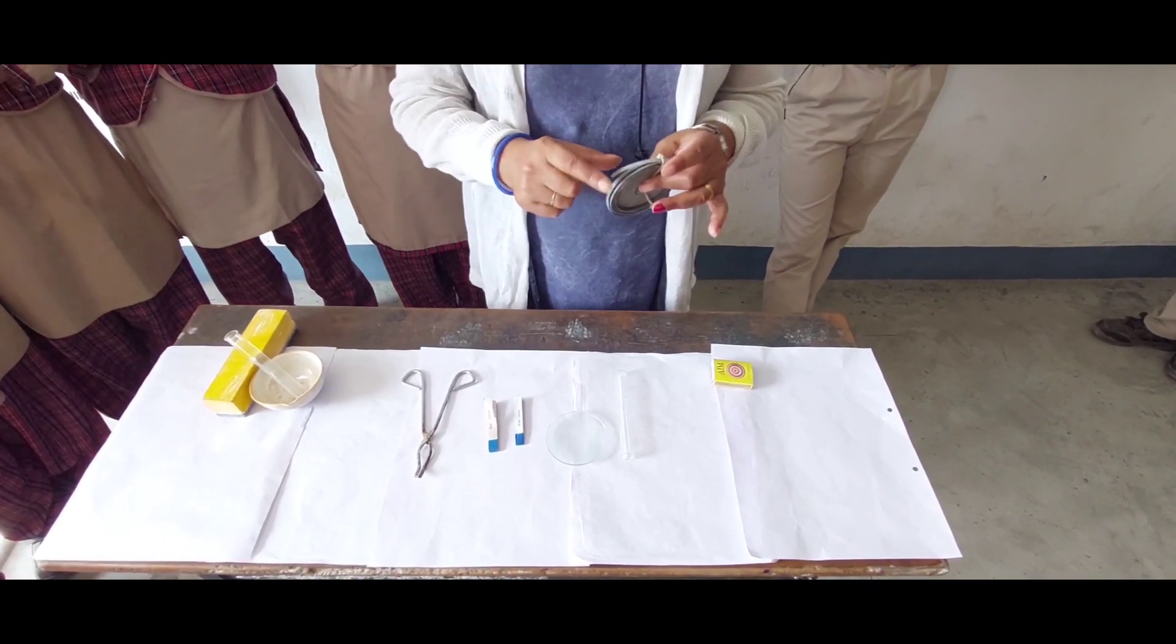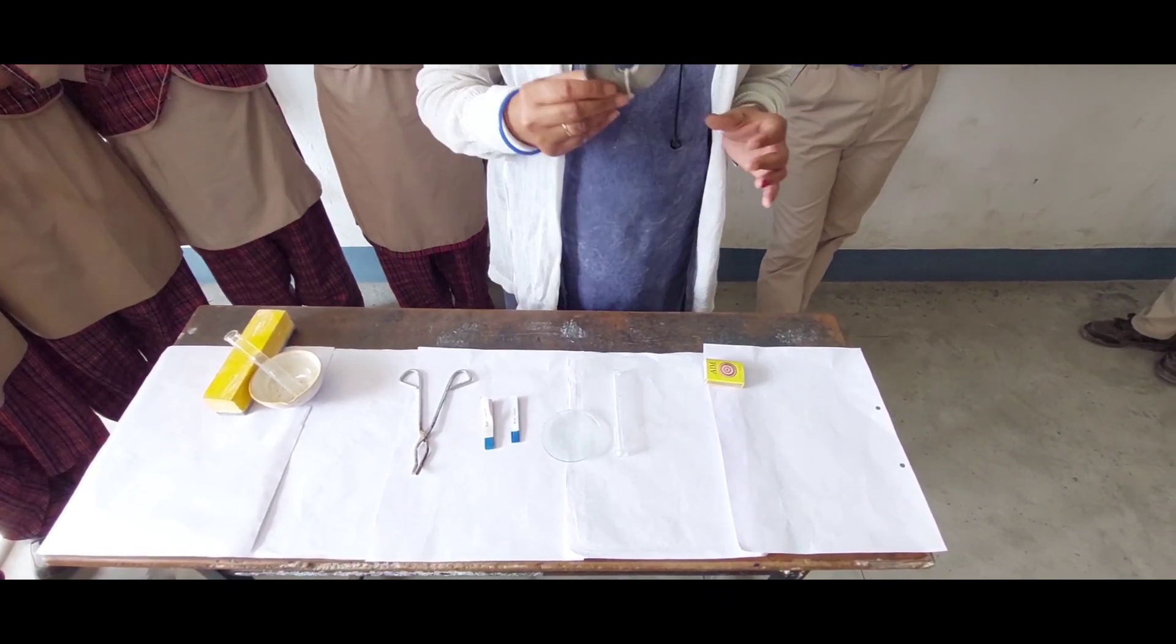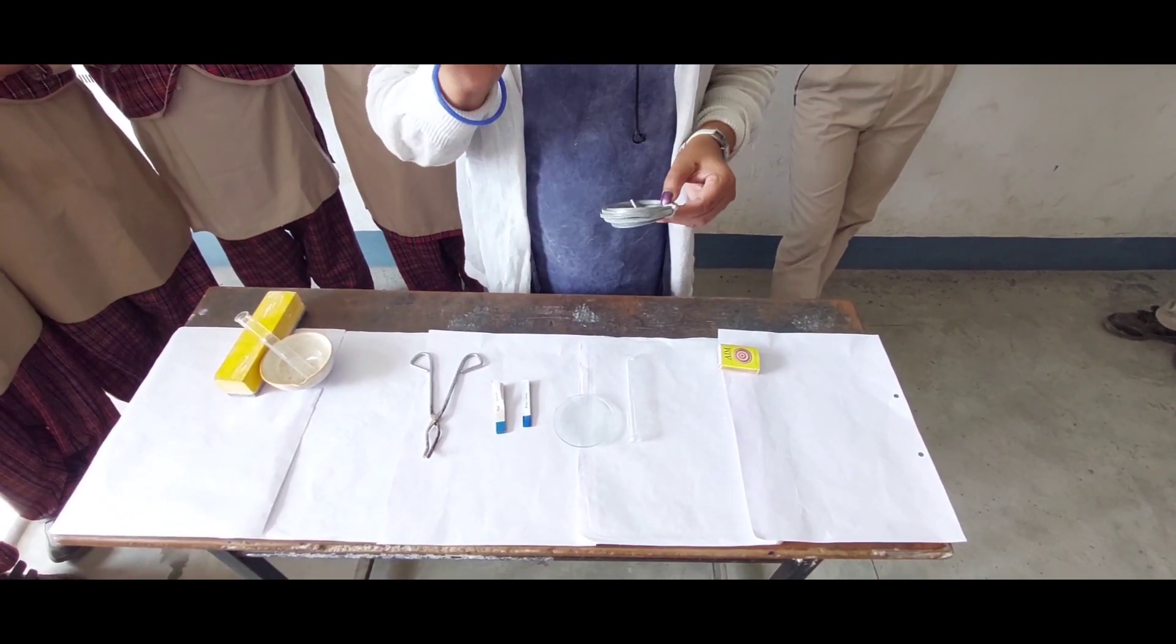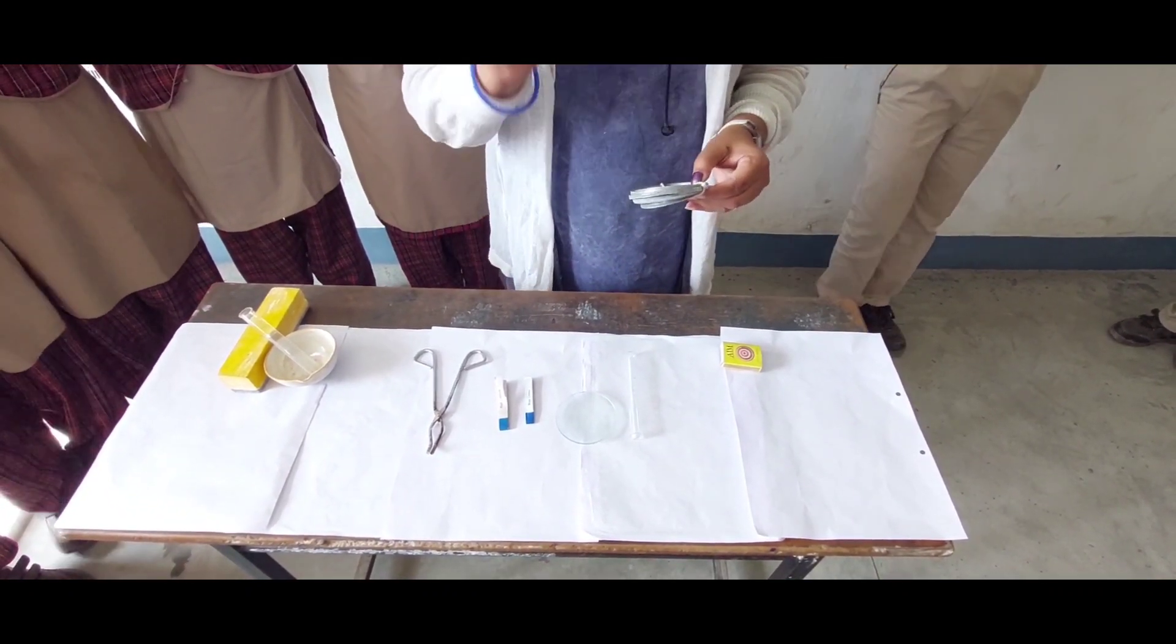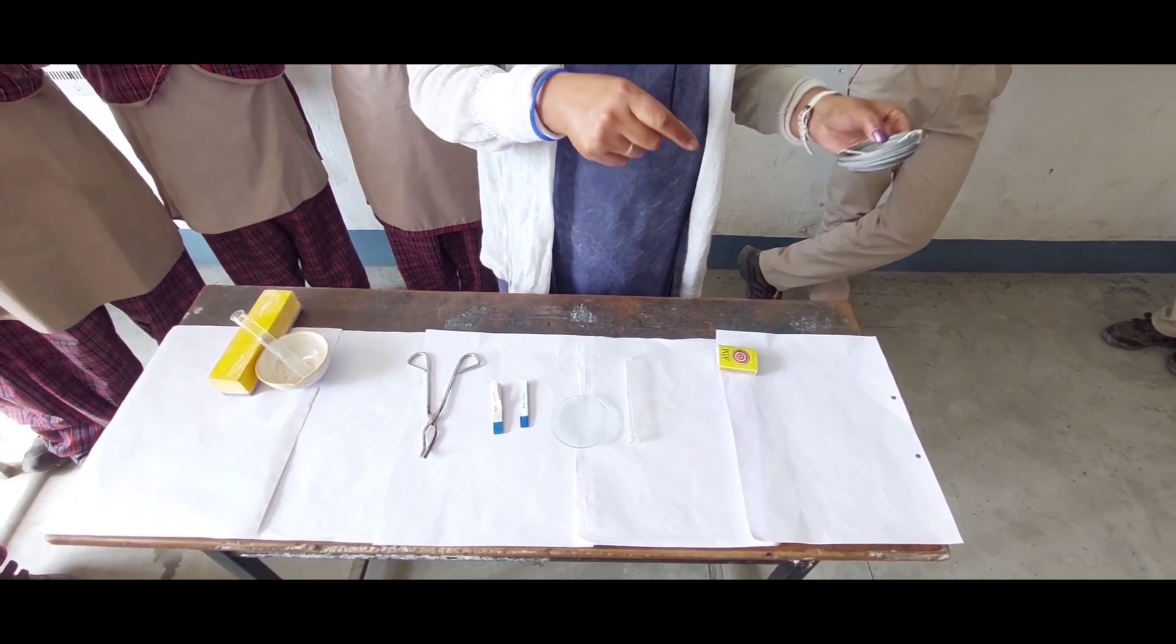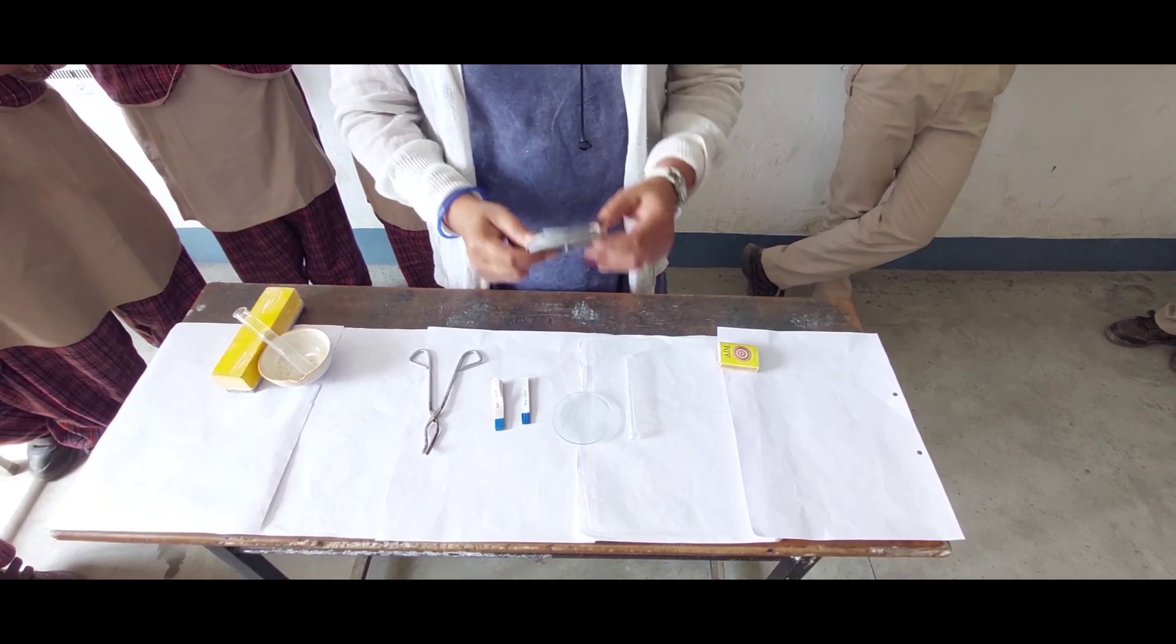When metal reacts with oxygen during burning, metal oxide is formed. This metal oxide is formed in powdered form.